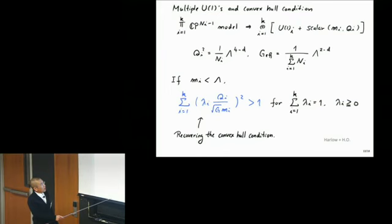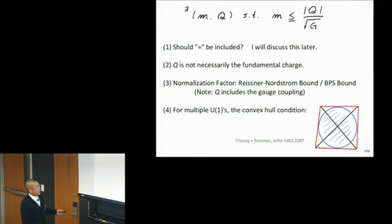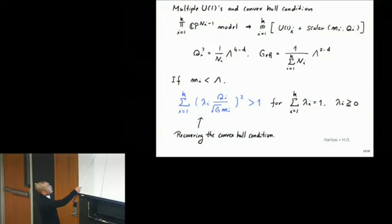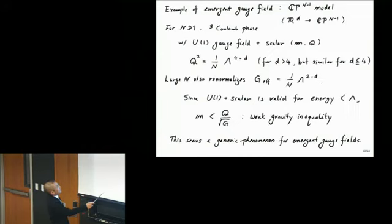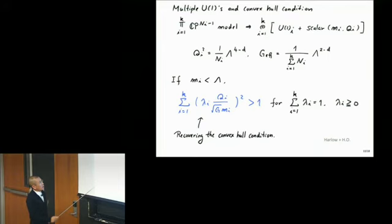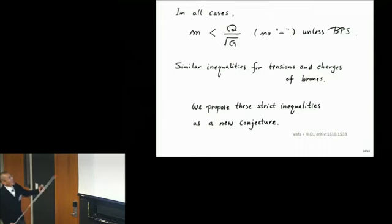This can lead to derivation of the convex hull condition that Cheung and Remmen were arguing for. Suppose you have multiple U1s coming from multiple CPN models. So low-energy theory is U1 gauge theory coupled to scalar for each of these charges. It's easy to work out. And it turns out to be equivalent to the convex hull condition of Cheung and Remmen. So in this case, we see that this type of argument supports the convex hull condition.